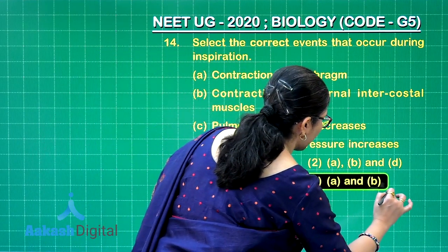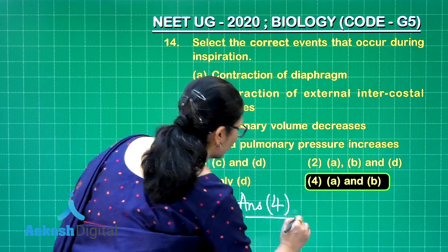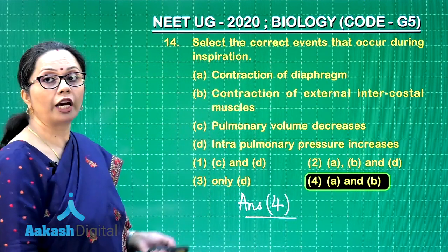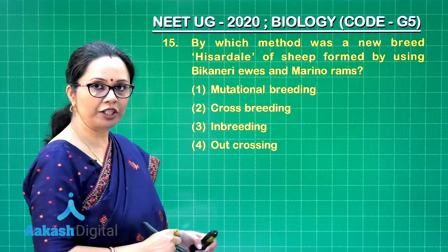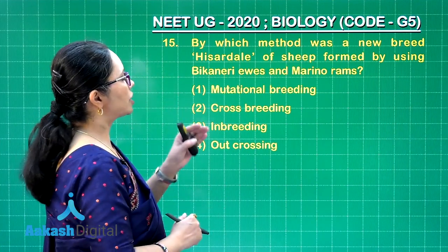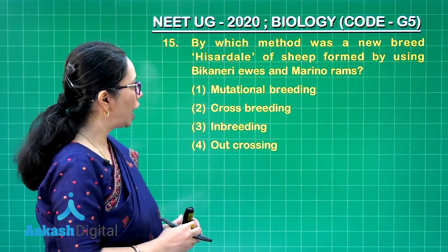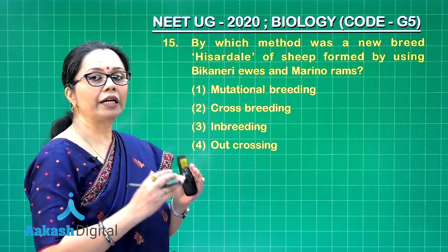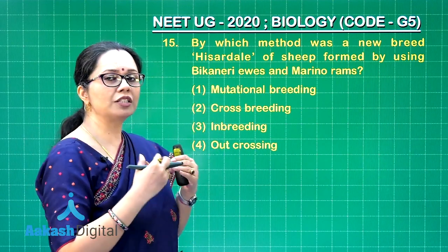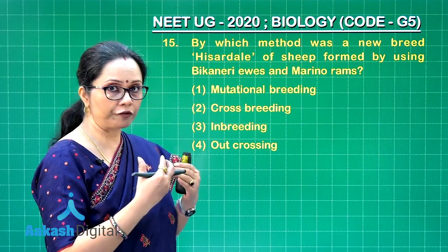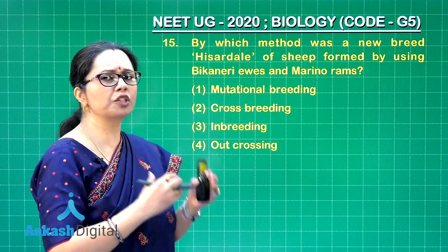The correct answer for Q14 is option 4. Moving to question 15: by which method was the new breed Hissardale of sheep formed using Bikaneri ewes and Merino rams? Bikaneri is an indigenous breed found in India, while Merino is one of the highest wool-yielding breeds — originally a Spanish breed but now widely associated with Australia.